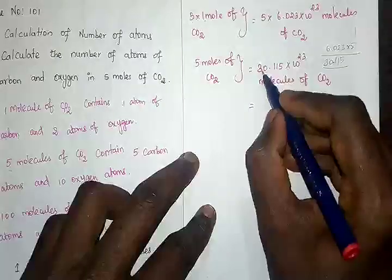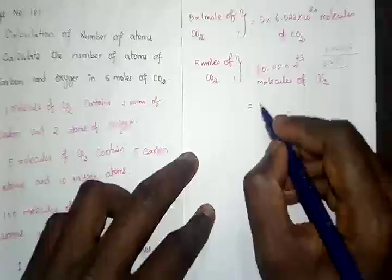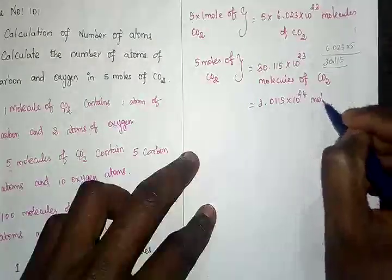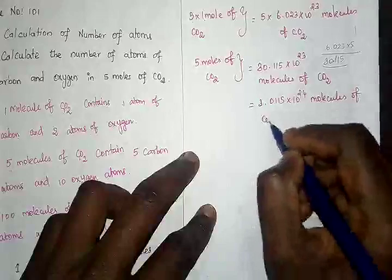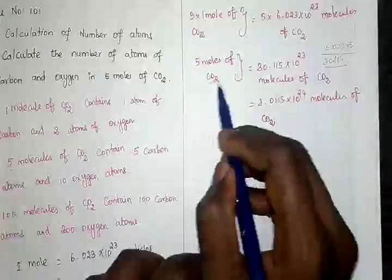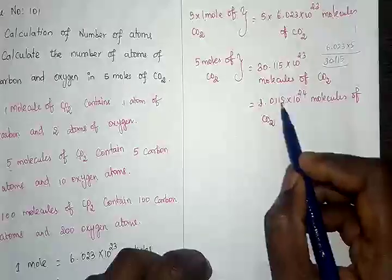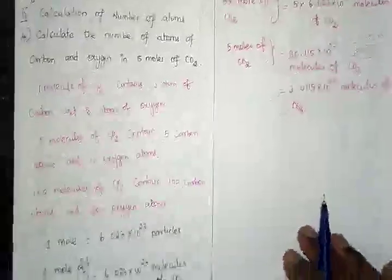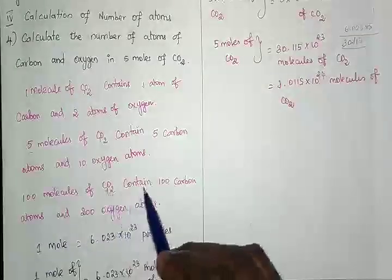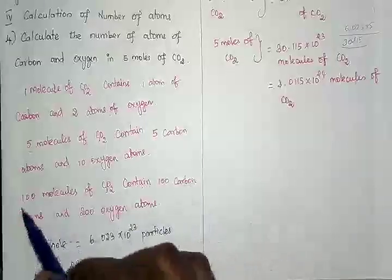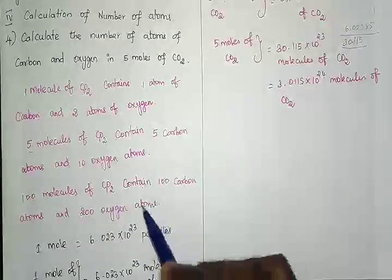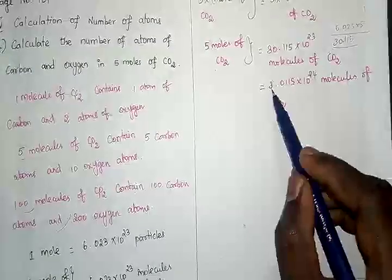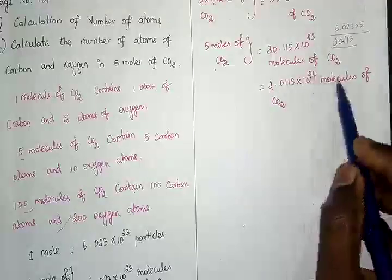That is 30.115 × 10²³ molecules of carbon dioxide. Moving one decimal place raises the power by one, giving 3.0115 × 10²⁴ molecules of carbon dioxide. So five moles of carbon dioxide contains 3.0115 × 10²⁴ molecules of carbon dioxide.